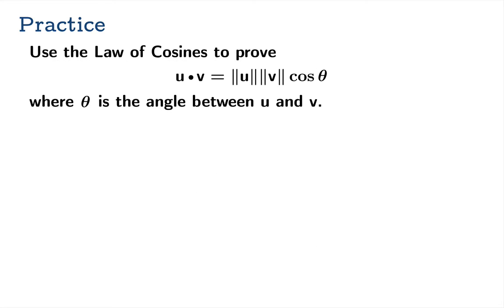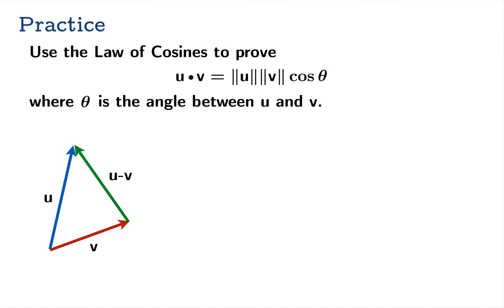We'll end with a proof of the formula: u dot v equals the length of u times the length of v times the cosine of the angle in between. We'll use the algebraic properties we just studied to give a slick algebraic proof, based on the law of cosines. Suppose you have vectors u and v, and we introduce a vector going from the tip of v to the tip of u — this would be u minus v. The law of cosines says c squared equals a squared plus b squared minus 2ab cosine theta.